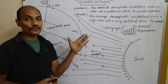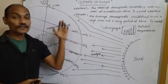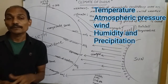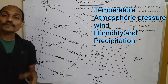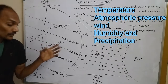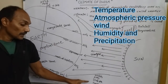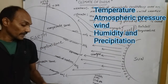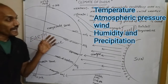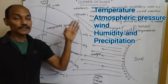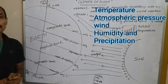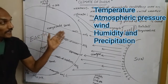Now we have to discuss the elements of climate and weather. The elements are temperature, humidity, wind, pressure, precipitation, and atmosphere.